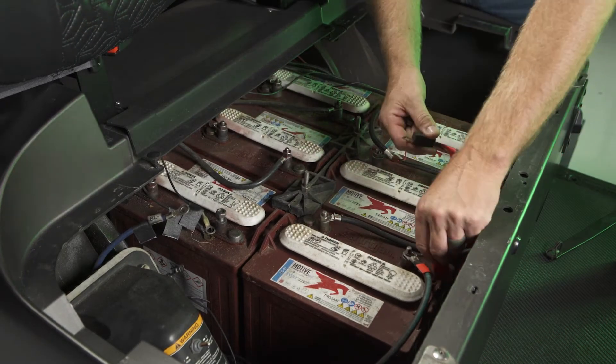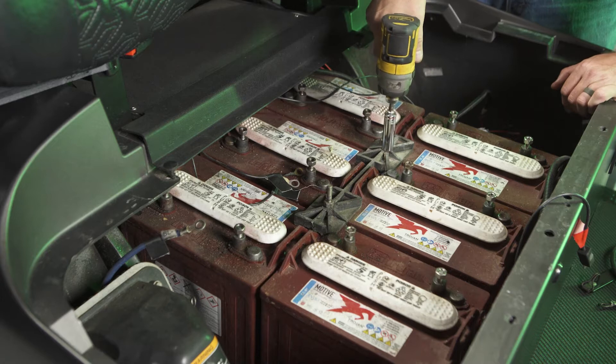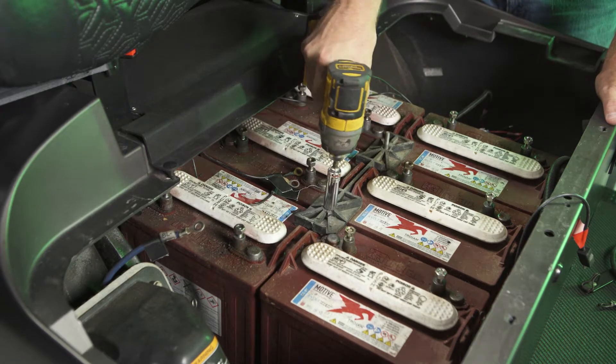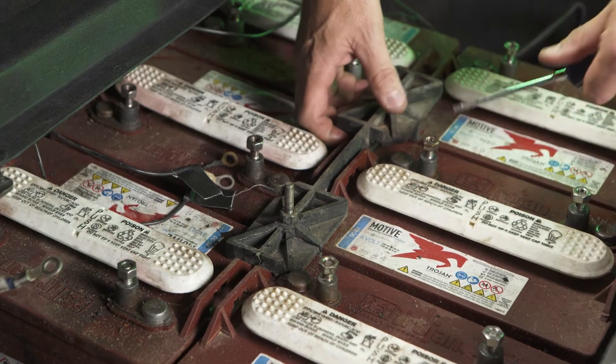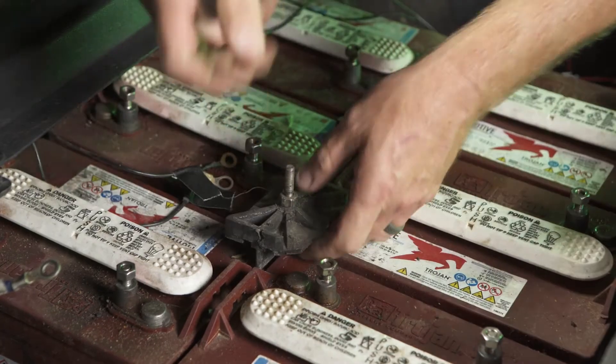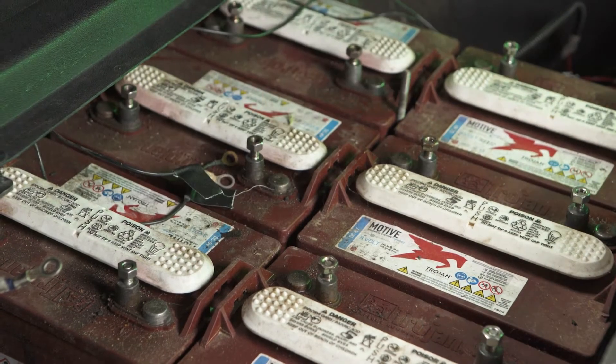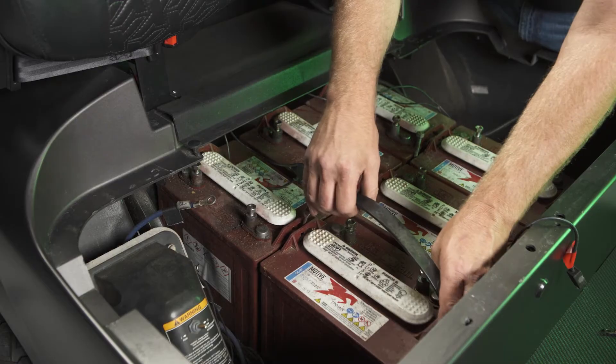Using a 16mm socket, remove the two battery hold-down nuts and washers. Remove the battery hold-down bracket. Carefully remove the batteries and J-hooks.